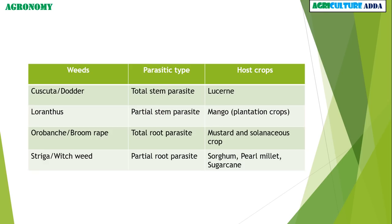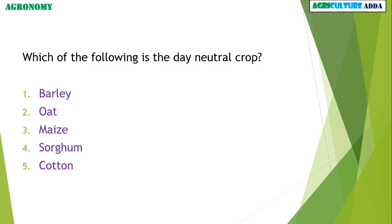Which of the following is the day-neutral crop? Barley, Oat, Maize, Sorghum, or Cotton? The answer is Cotton.